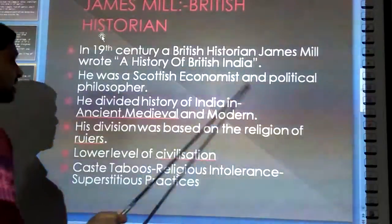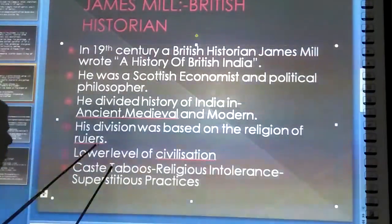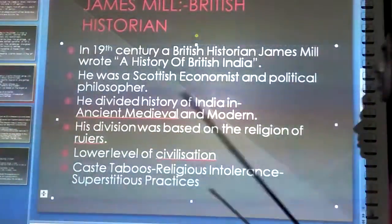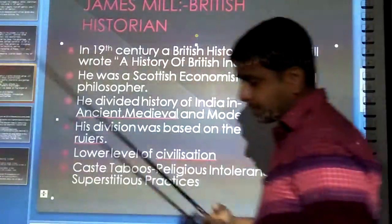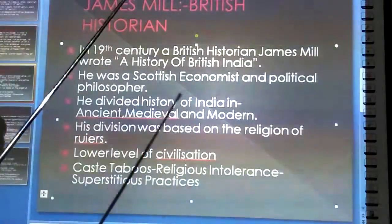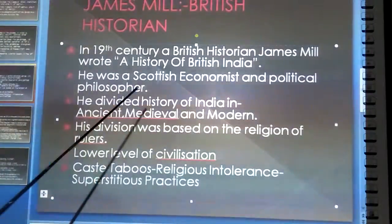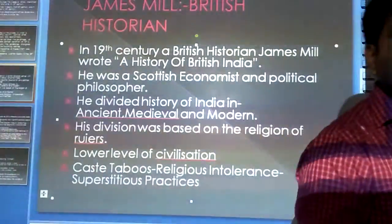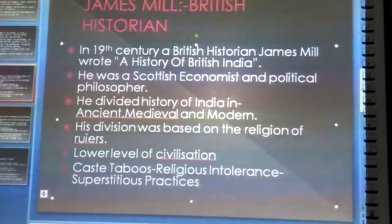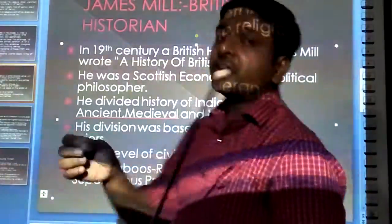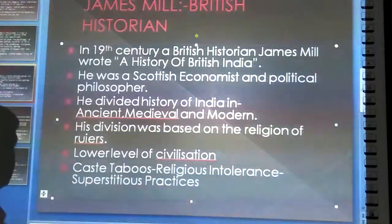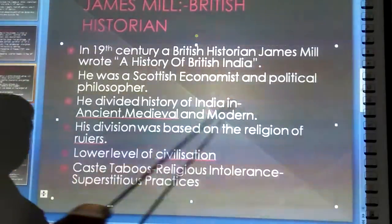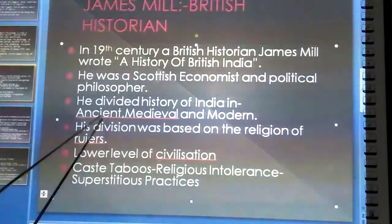He was a Scottish economist and political philosopher. Scottish means a person who belongs to Scotland. A philosopher is a man of good ideals and morals who gives different types of philosophies based on arguments. This person James Mill divided the history of India into ancient, medieval, and modern parts. His division had three parts: ancient, medieval, and modern. However, his division had a serious drawback — it was based on the religion of the rulers.